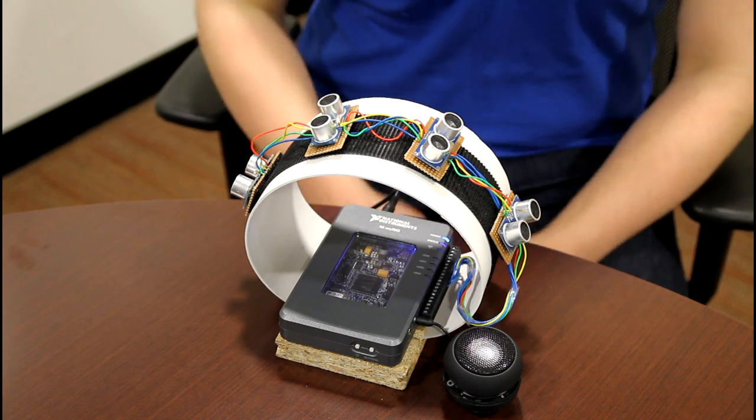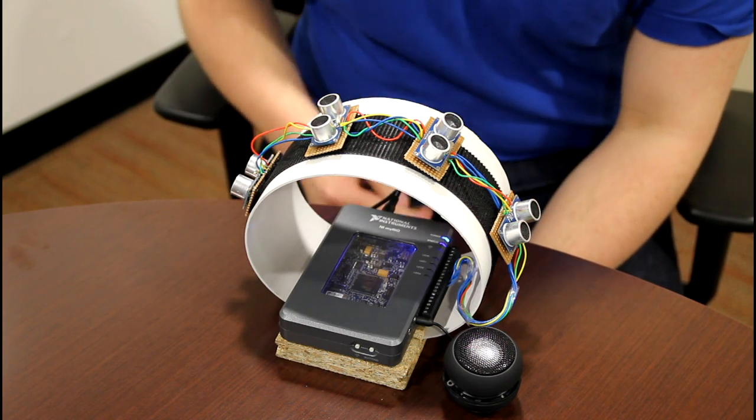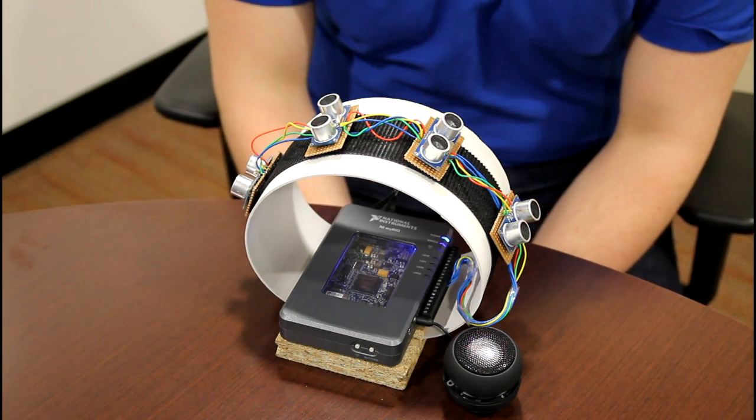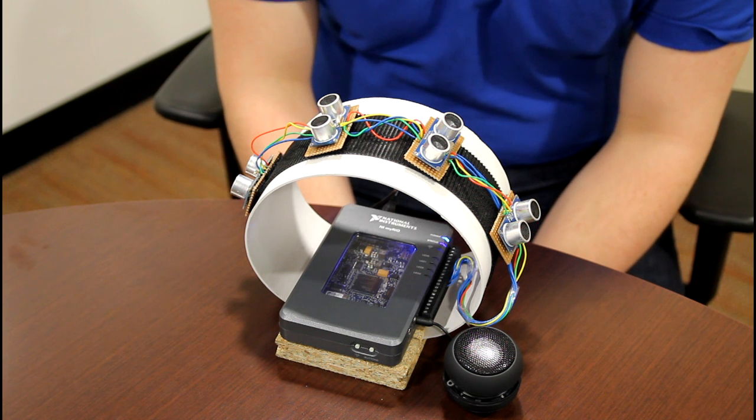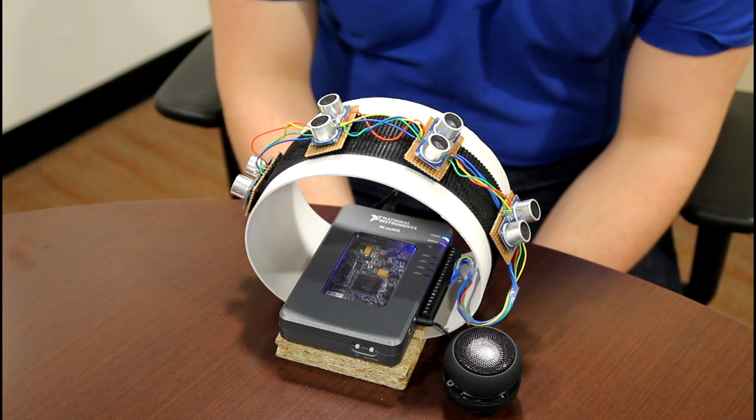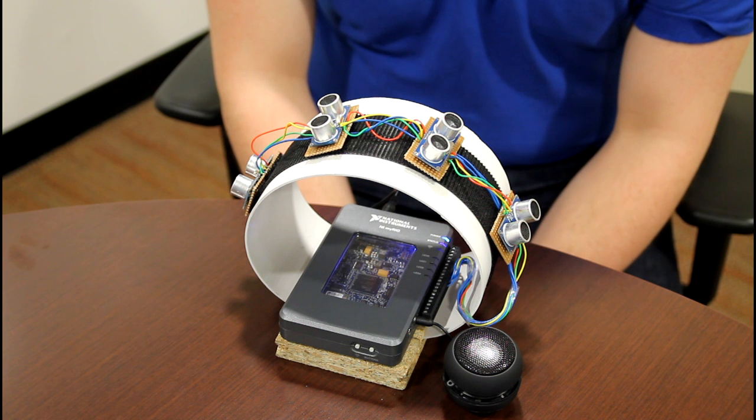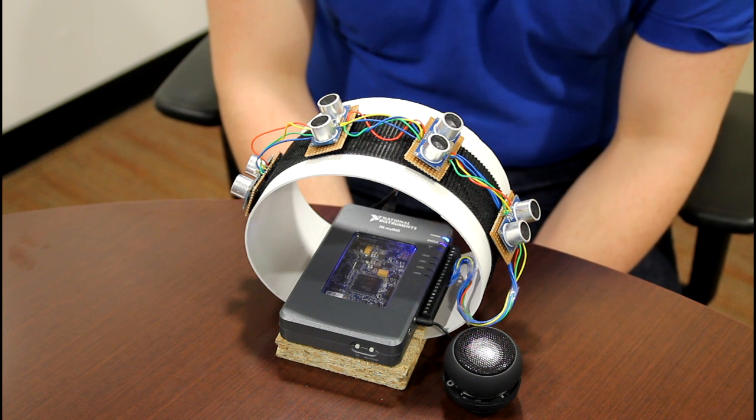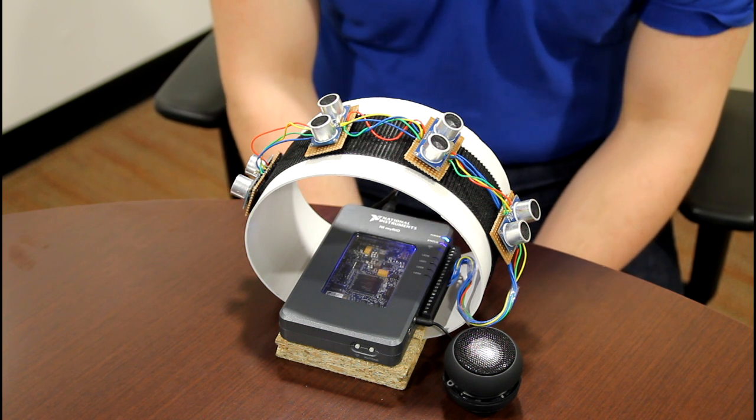So this is the final result, what I've made at the end of my project. As you can see, I have four ultrasound sensors on an arc, allowing them to remain close together, but not interfere with one another. Each sensor covers an octave of notes, and the further away your hand moves, the higher the frequency within that octave. Let me show you.